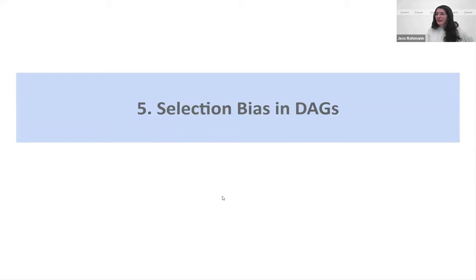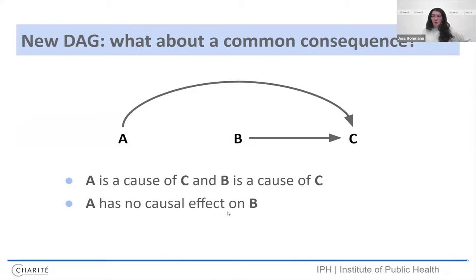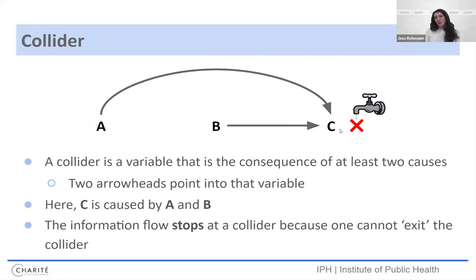Selection bias. We spend a lot of time on confounding as epidemiologists and when we're talking about secondary data use, but we should also pay attention to other things that can go wrong. And DAGs are super useful to detect these potential problems as well. So what about a common consequence? Here we have two variables. Now this time we have A and B that both cause C. Notice that A has no causal effect on B. So when you have these common consequence situations and you have these two arrowheads coming together in a DAG, you can think of the information flow I mentioned earlier stopping at that variable. And we call that variable a collider because the two arrows are then colliding on that variable, on that path.